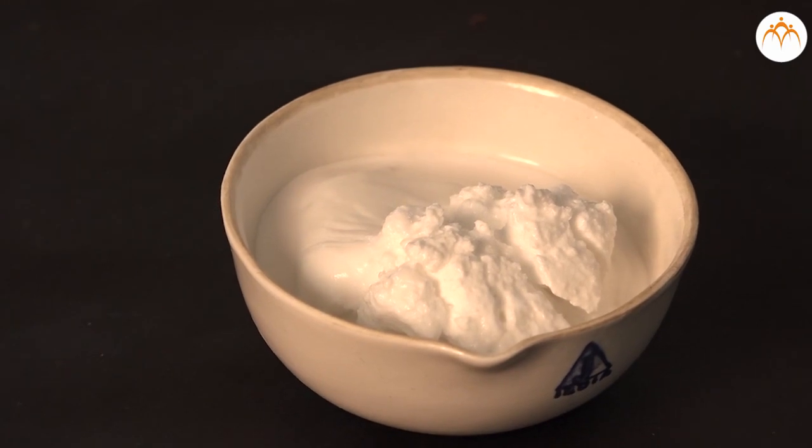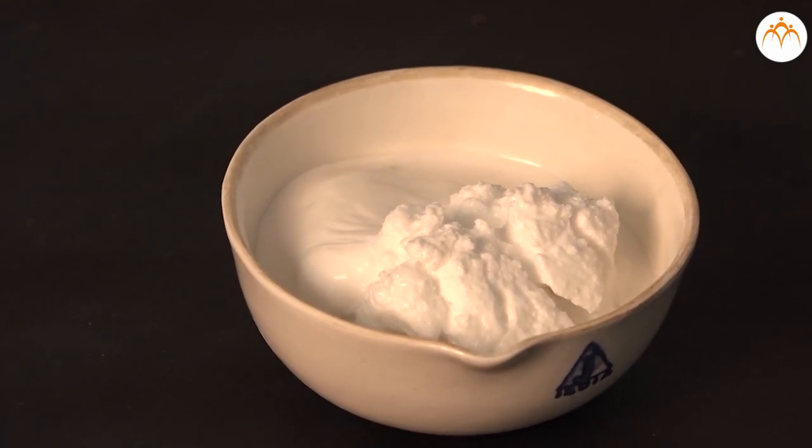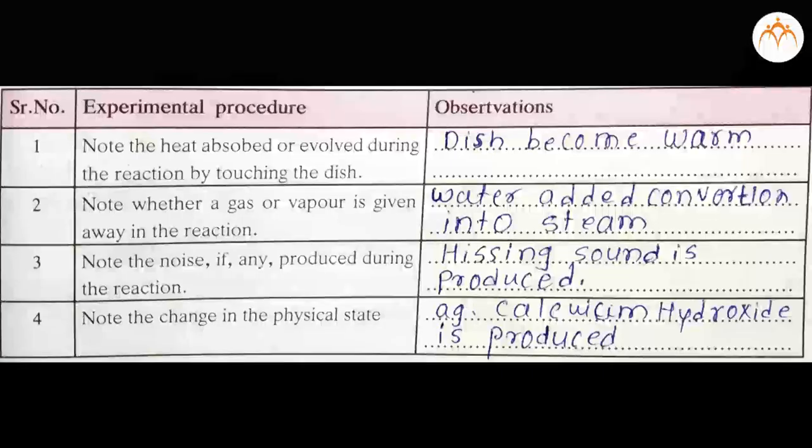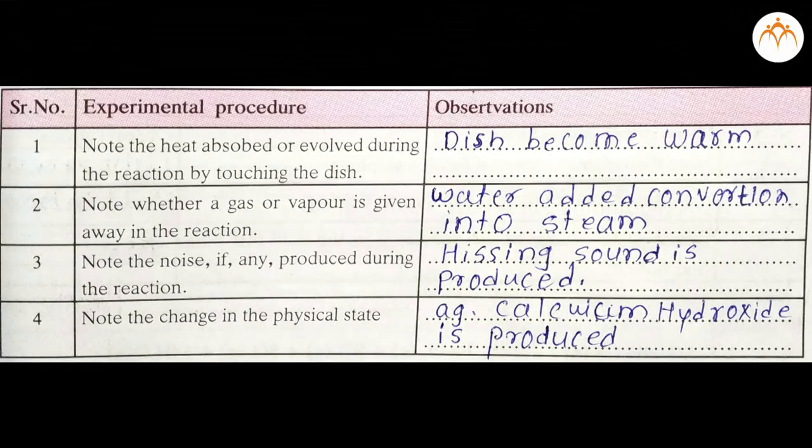A hissing sound is produced during the reaction. The china dish becomes hot, so heat is evolved. It is an exothermic reaction. Slaked lime or calcium hydroxide is produced. This is an example of combination reaction.